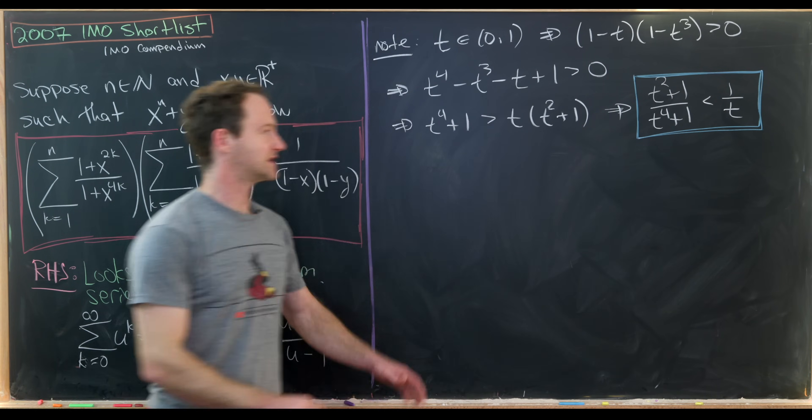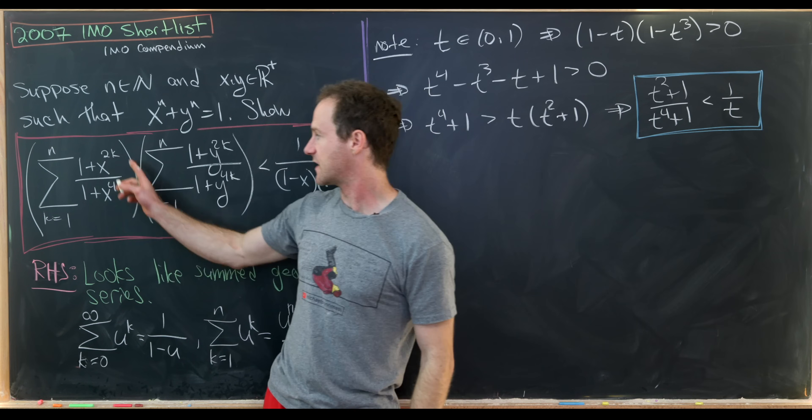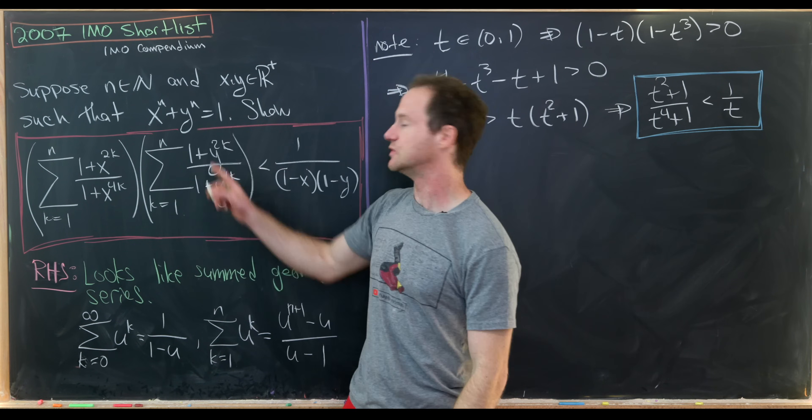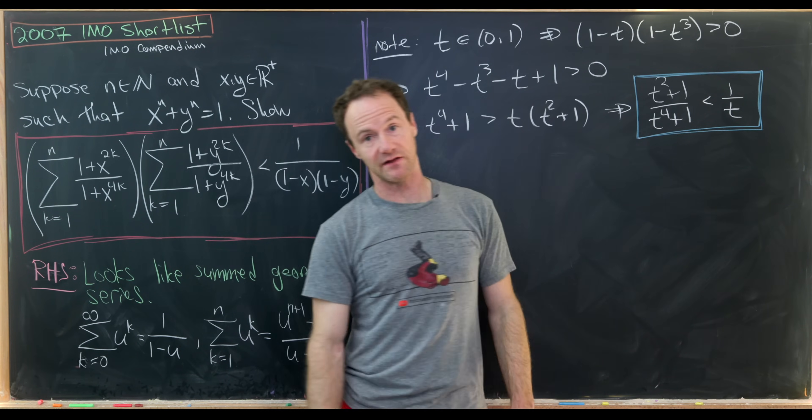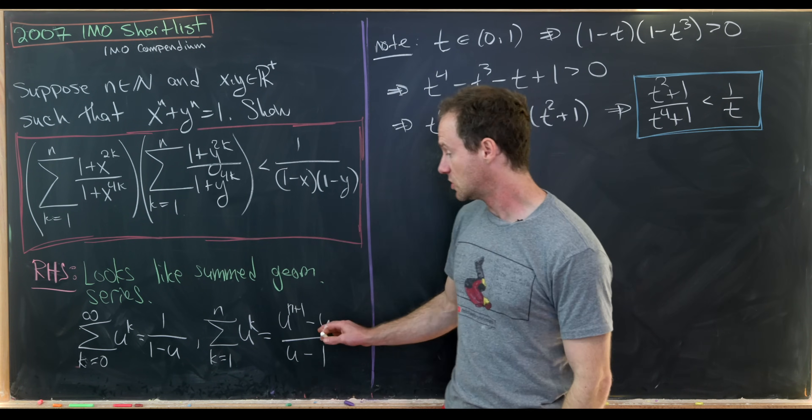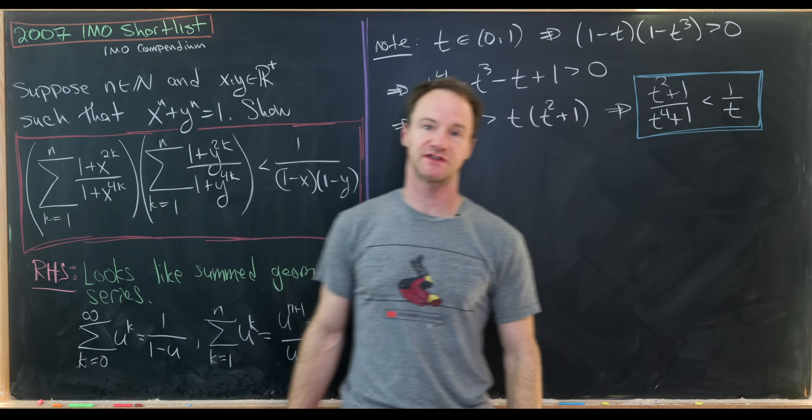Because notice that that thing on the left-hand side of our inequality looks like the summands from these two sums. And then that thing on the right-hand side of the inequality looks like it could build this sum of a finite geometric series.